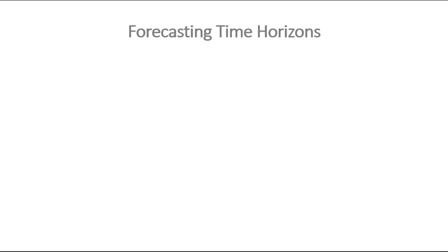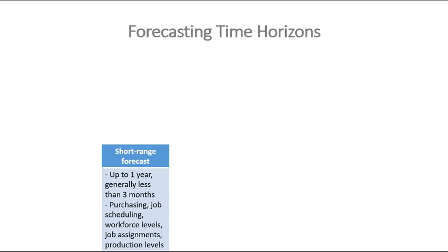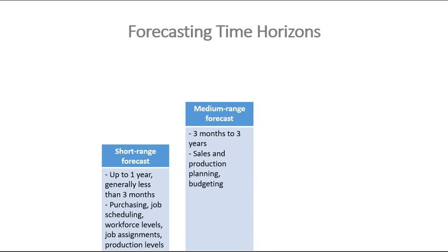There are three forecasting time horizons. The short-range forecast covers up to one year and relates to purchasing, job scheduling, and workforce levels. The medium-range forecast spans three months to three years — for example, Samsung announcing a new phone release a year in advance.